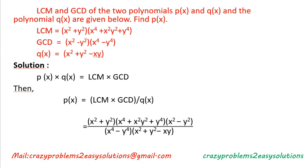Using the formula p(x) × q(x) = LCM × GCD, we get p(x) = LCM × GCD ÷ q(x). Substituting: LCM = (x² + y²)(x⁴ + x²y² + y⁴) and GCD = (x² − y²)(x⁴ − y⁴), divided by q(x) = x² + y² − xy.